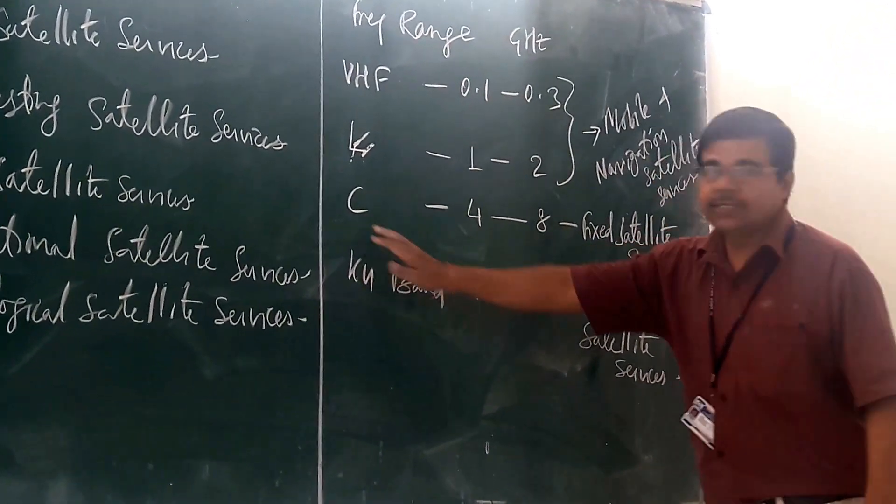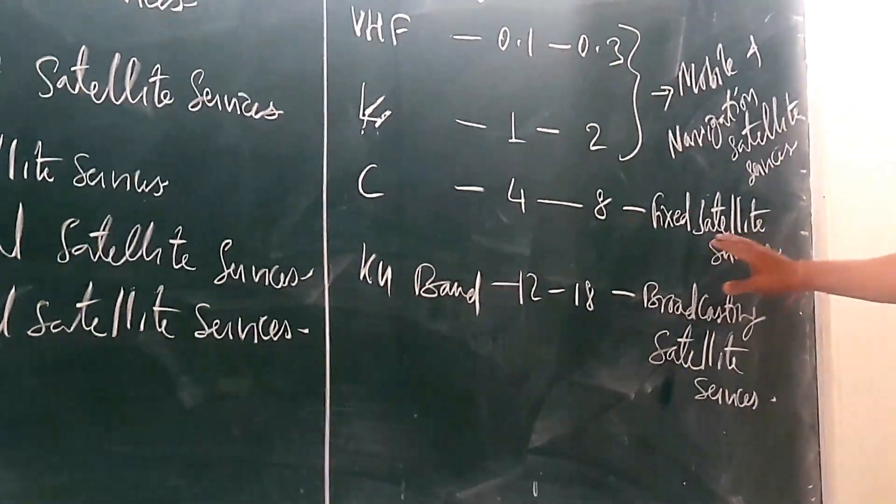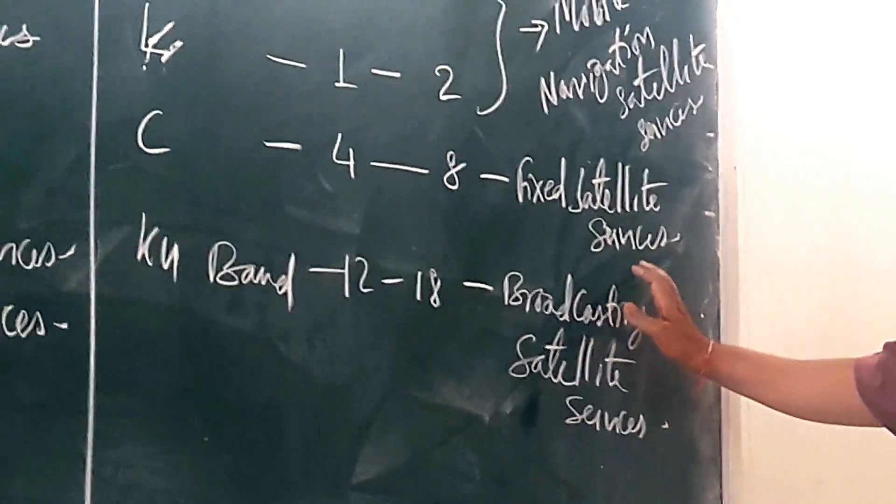You are having the C band, it is from 4 to 8 gigahertz, and this is allotted for your fixed satellite services.